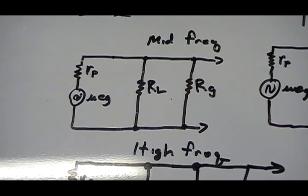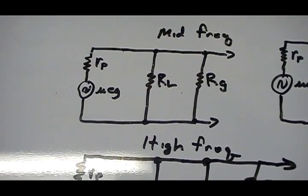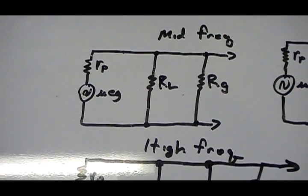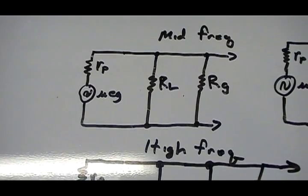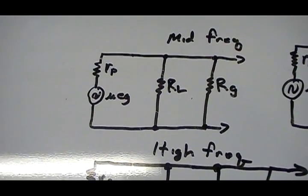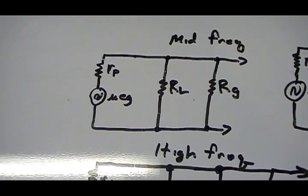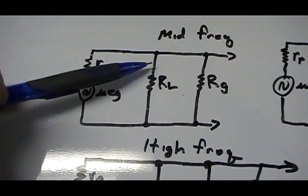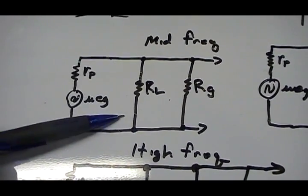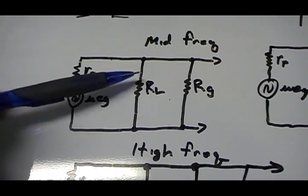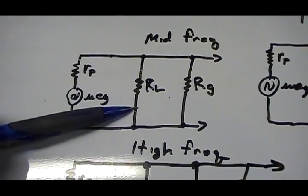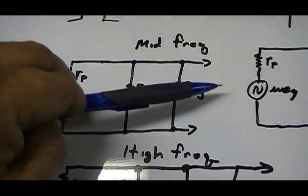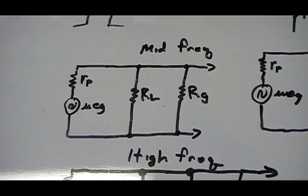In a parallel circuit, voltages always stay the same — that's how your house outlets are wired in parallel, so every socket has the same voltage. The same thing happens here: since we're dealing with voltage amplifiers, the voltage across RL will be the same as across RG, which then goes into the input of the next tube.